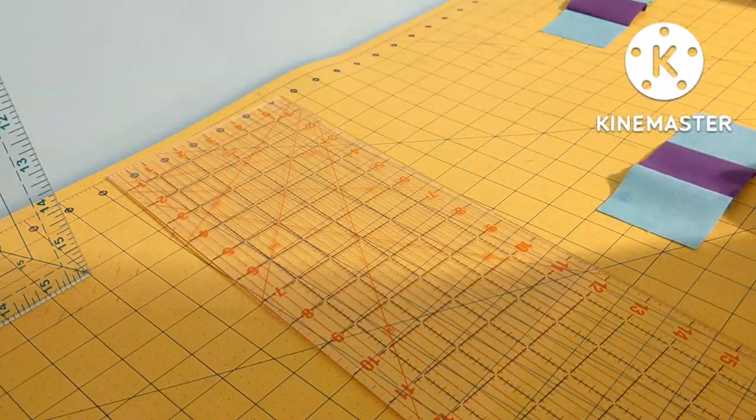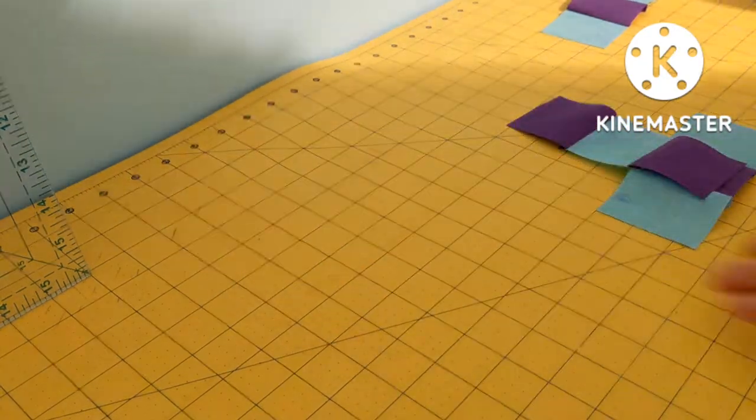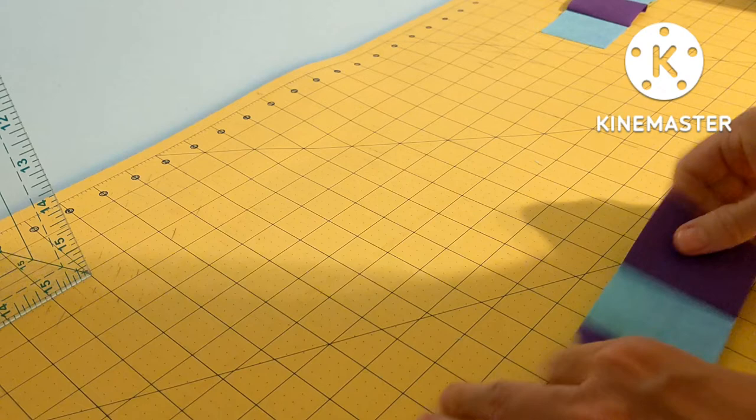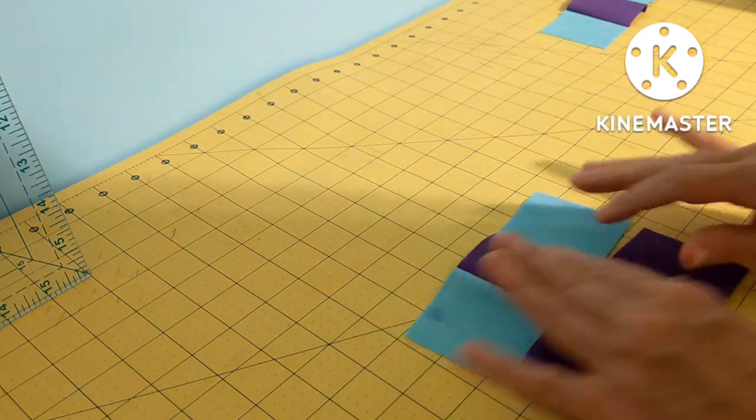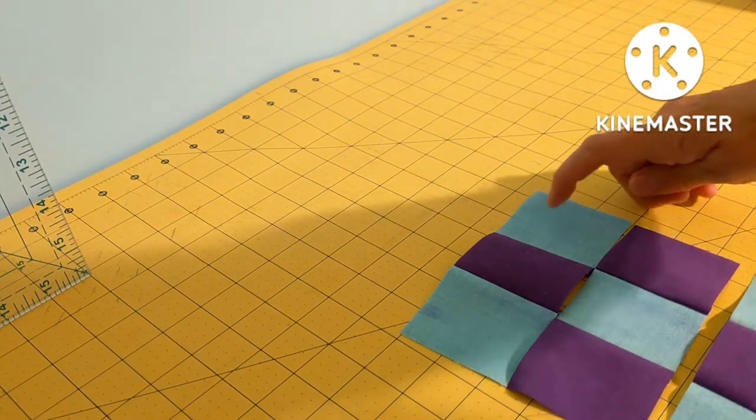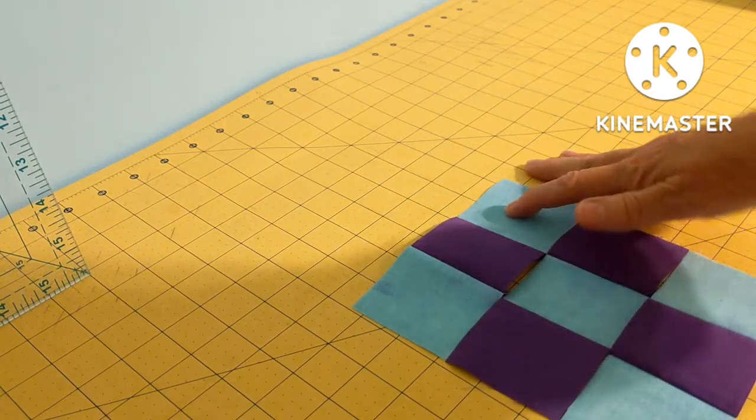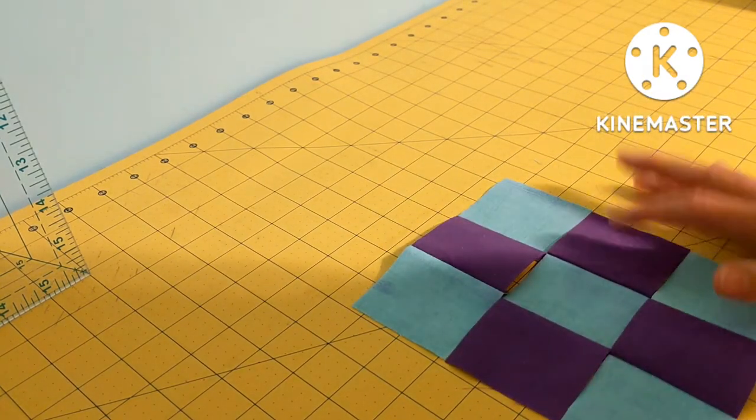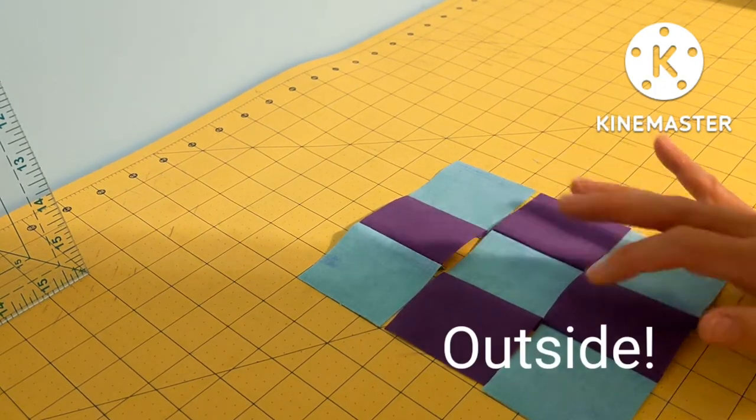You should get about 16 pieces per strip. So that means you'll have enough to do eight blocks of the corners and you'll have 16 of the middle. So you'll need double of your middle strip.